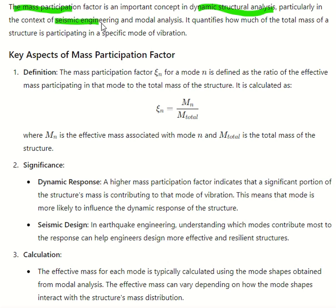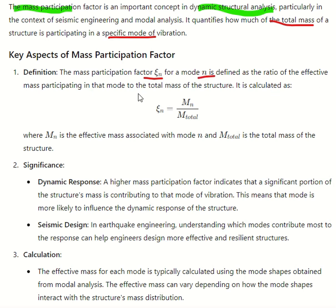Particularly in the context of seismic engineering and modal analysis, the mass participation factor quantifies how much of the total mass of a structure is participating in a specific mode of vibration. For example, if a structure has 300 degrees of freedom, it will have 300 specific modes. For each degree of freedom there will be one specific mode. How much of the total mass is participating in that specific mode is quantified in terms of the mass participation factor.